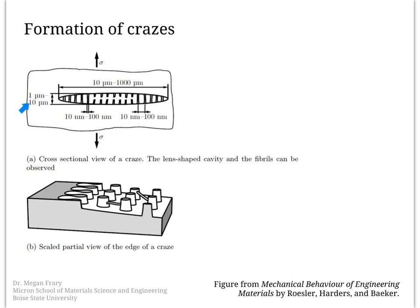The overall diameter of the craze is on the order of 10 to 1,000 microns — so up to a millimeter — and they're bridged by fibrils. These fibrils are on the order of 10 to 100 nanometers and are spaced at a similar spacing of 10 to 100 nanometers, depending on how the cavities formed. The volume fraction of the fibrils in the craze is between about 10 to 50 percent.